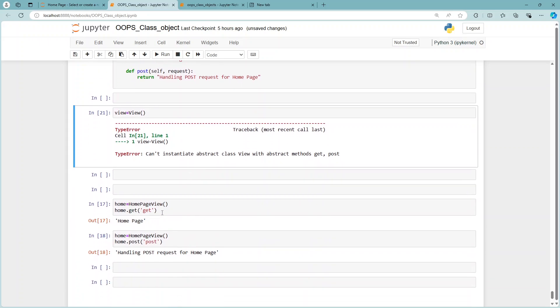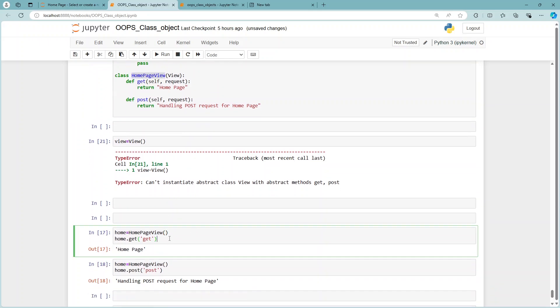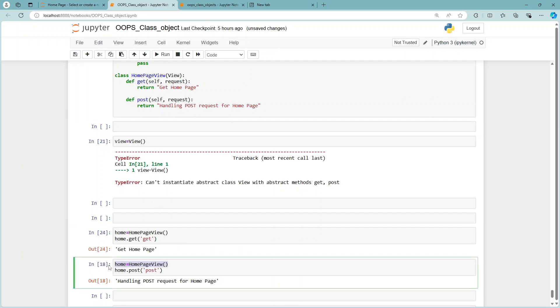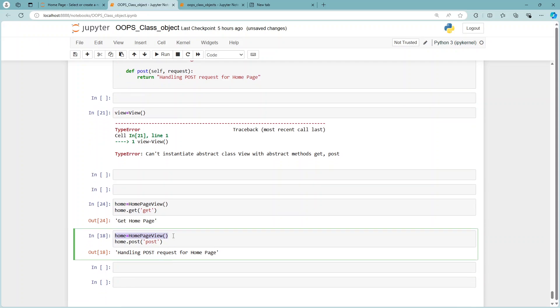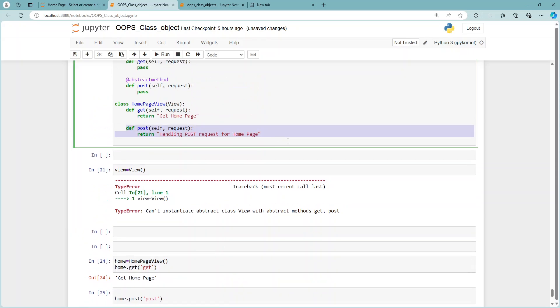When I try to create an object of my child class, it will work. If you see here, it gives 'home page' whatever I have given. If I say get home page, it will give me get home page. Same way, I have created the object here. If I delete it and run it, it still gives me the results 'handling post request'.